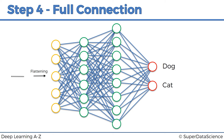We've already done all the groundwork — convolution, pooling, and flattening — and now the information goes through the artificial neural network. The information flows from the very start: the image is processed, then convolved, then pooled, flattened, and then through the artificial neural network — all four steps. And then a prediction is made.